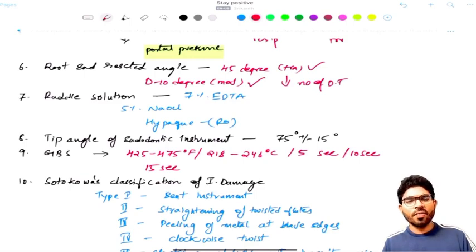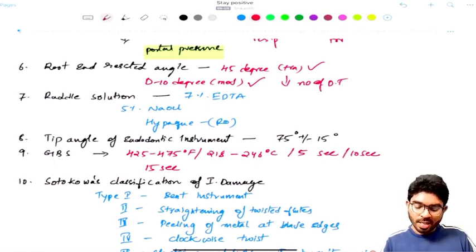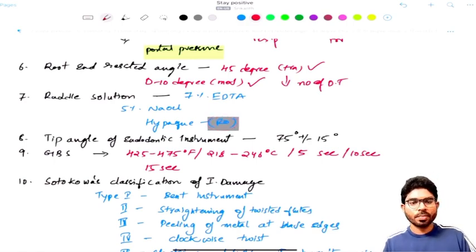Do make a note about Riddle solution. Riddle solution - first of all, the main advantage of Riddle solution is it helps in identifying the missed canals. It helps in identifying the accessory canals and everything, and that too on a radiograph, because basically this solution has a radiopaque material. So this radiopaque material helps in identifying the extra things which are being missed with the help of multiple radiographs. Basically, the solution consists of 7% of EDTA, 5% of NaOCl and a radiopaque material.